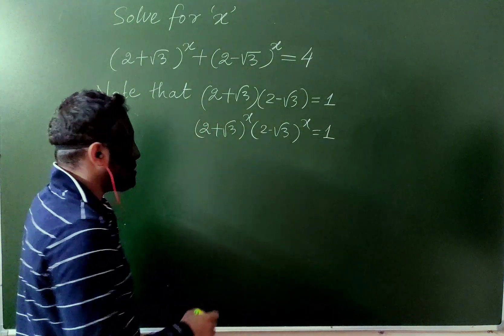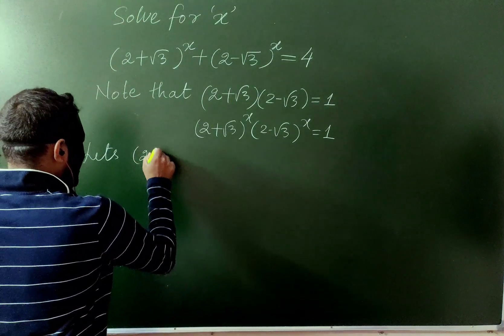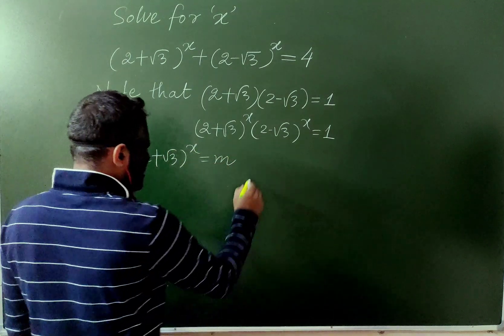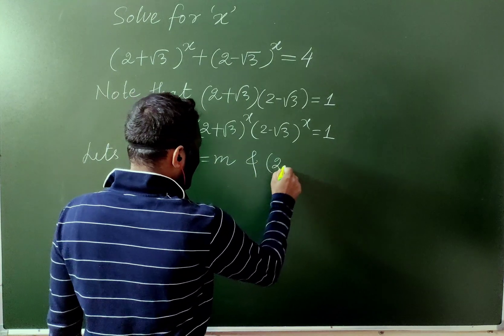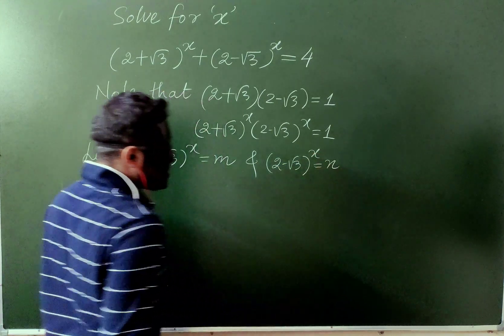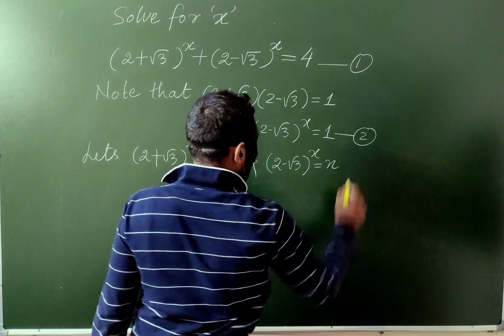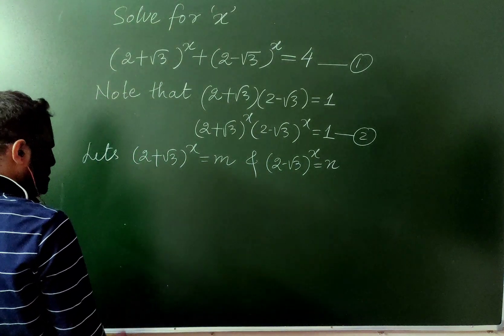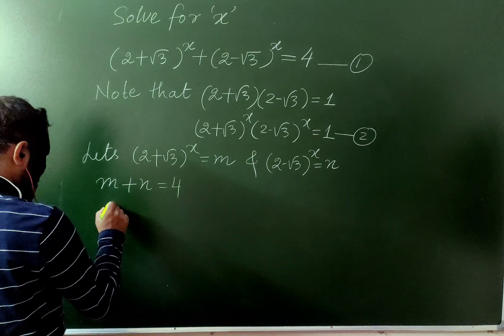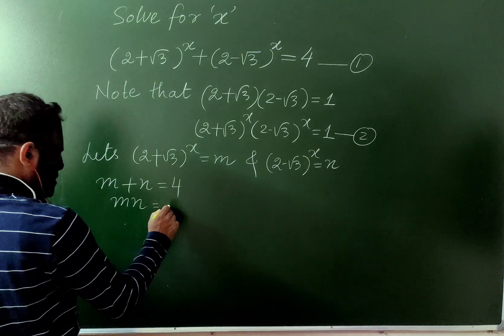So to make it simple, let this one be m and this one be n. Then this equation, this set of two equations becomes: m plus n equals 4, and m times n equals 1.